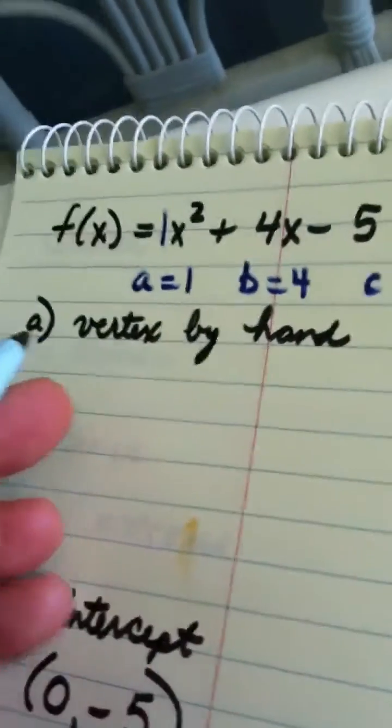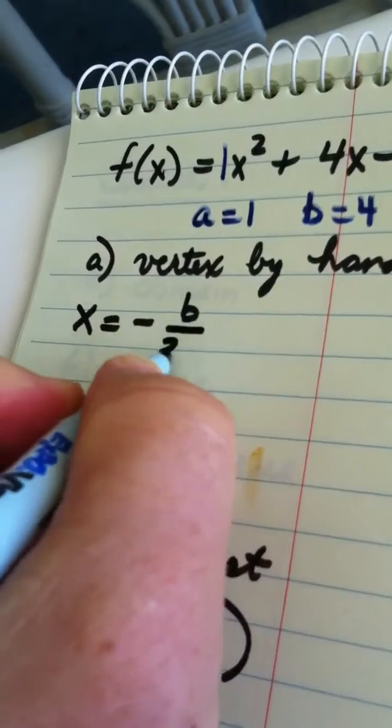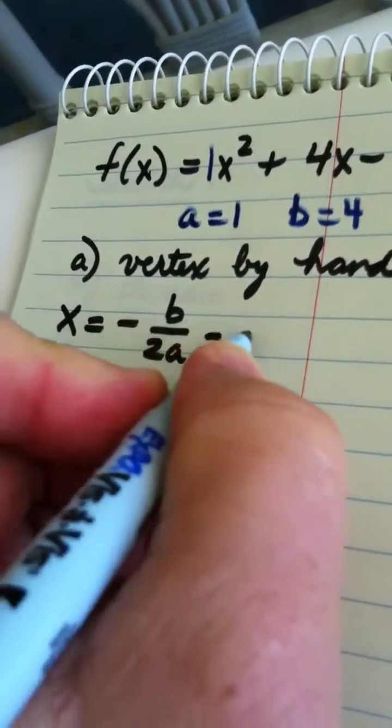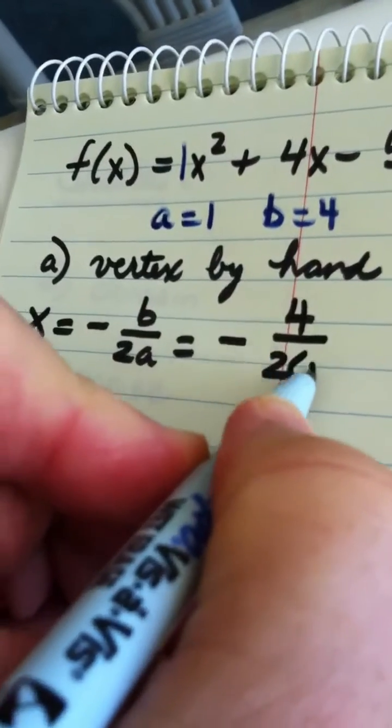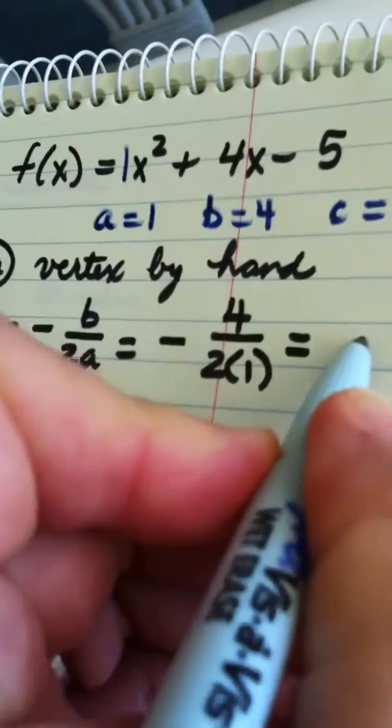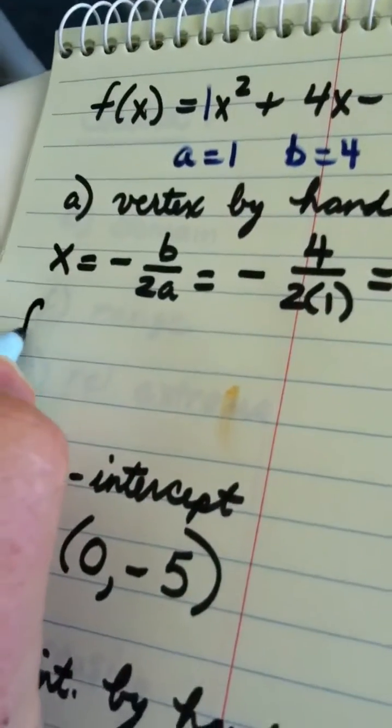So that part's done. To locate the vertex, x is equal to the opposite of b over 2a. That would be the opposite of 4 over 2 times 1, and that's a negative 2.